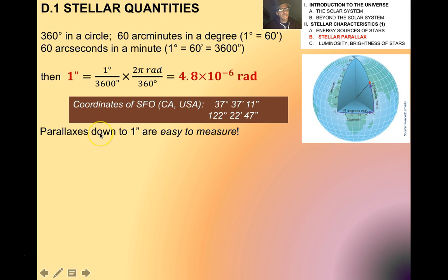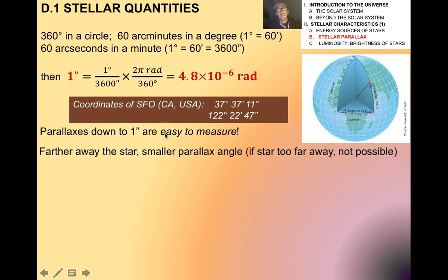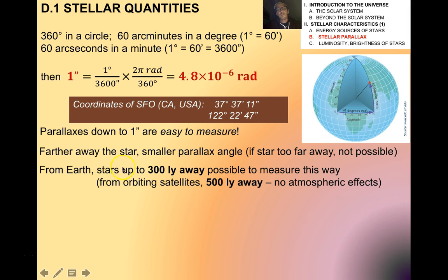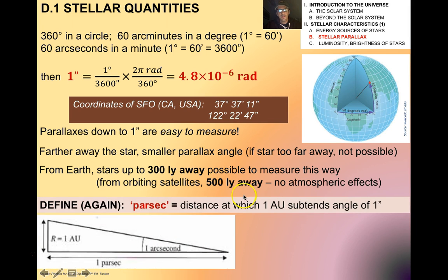It turns out that parallaxes down to one arc second are actually quite easy to measure with modern telescopes. Obviously, the farther away the star, the smaller the parallax angle, so there's a limitation in terms of how far away we can measure using the parallax method. From the Earth, we can use parallax to determine distances of stars up to about 300 light years away. From orbiting satellites, we can detect stars that are 500 light years away because there are no atmospheric effects.